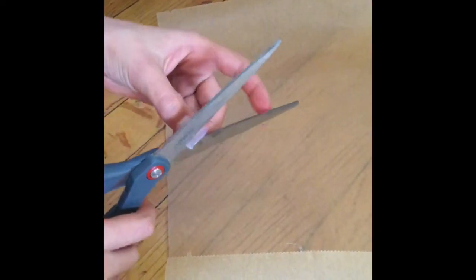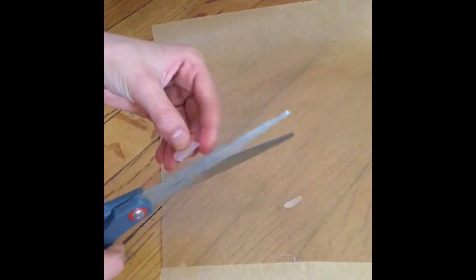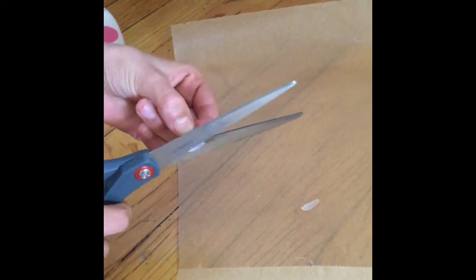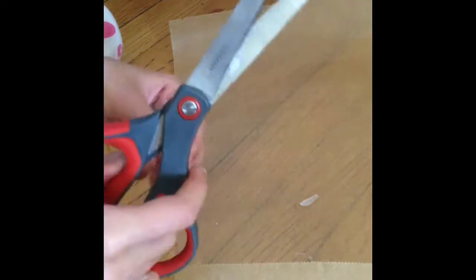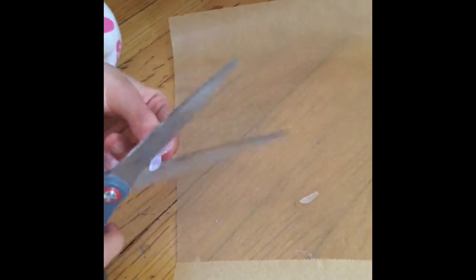Once it is dry, we're just going to cut a triangle out of it. And this is going to be the top of the soap dispenser.